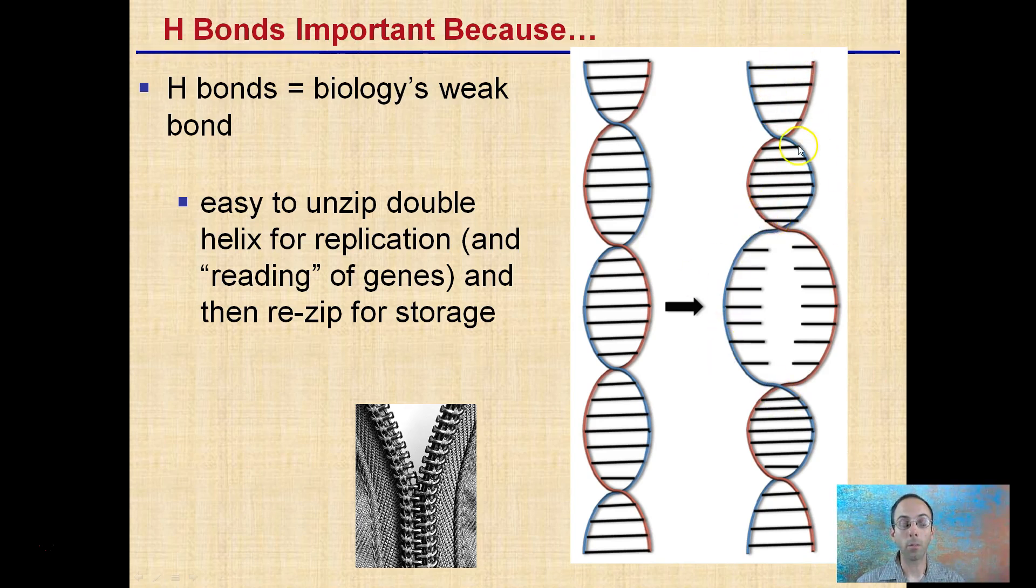It's very important that this doesn't fall apart because it is the genetic information. So we want these hydrogen bonds to allow us to open up a section of DNA to recopy or read a gene, and then we want them to reseal up so that we don't lose our DNA structure.